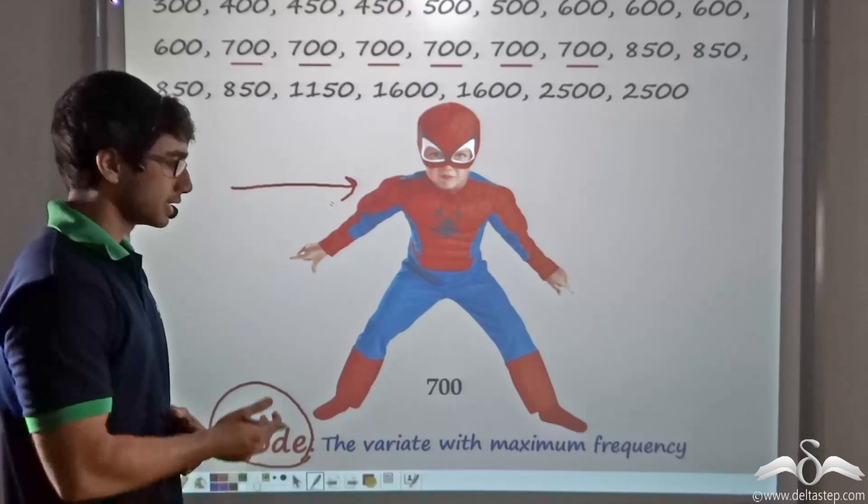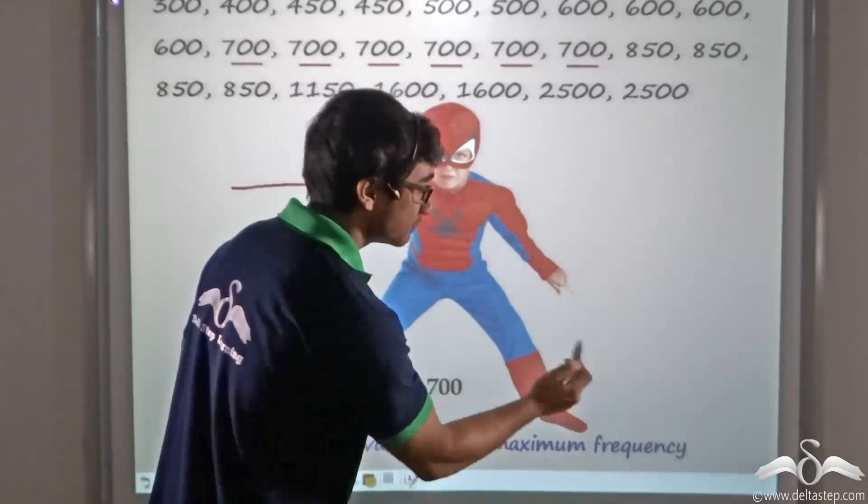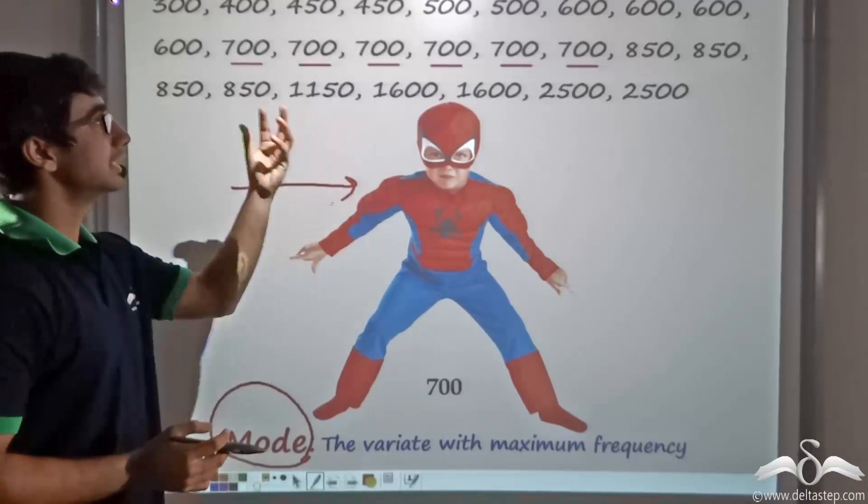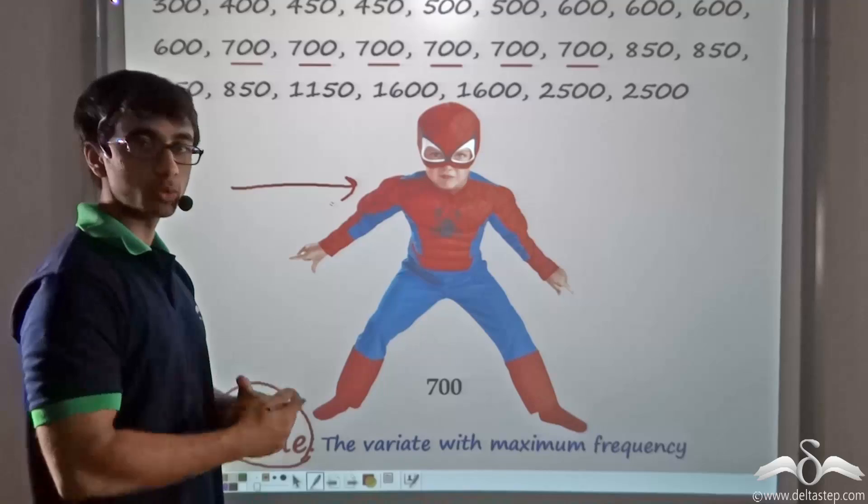So what can we say? We can say that mode is the variate with the maximum frequency, or in other words, the particular variate that occurs the maximum number of times in the given set of observations.